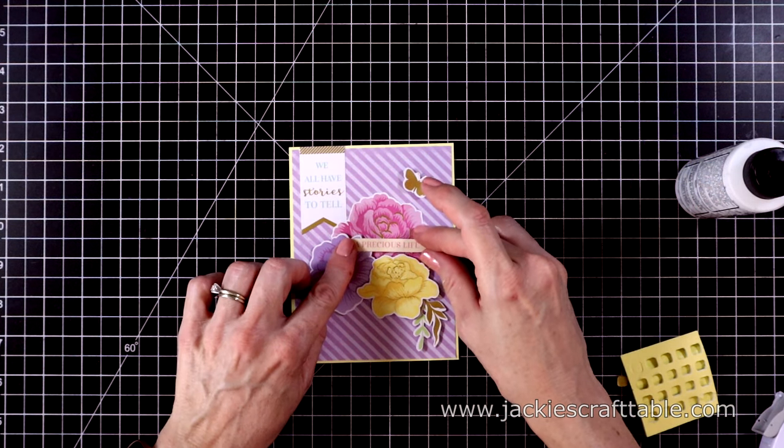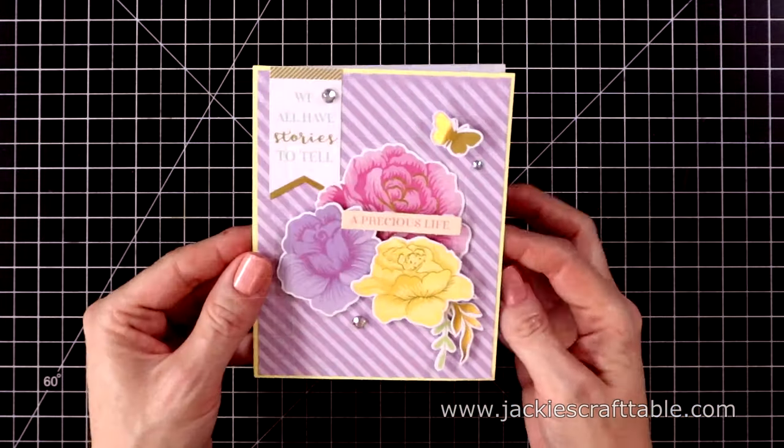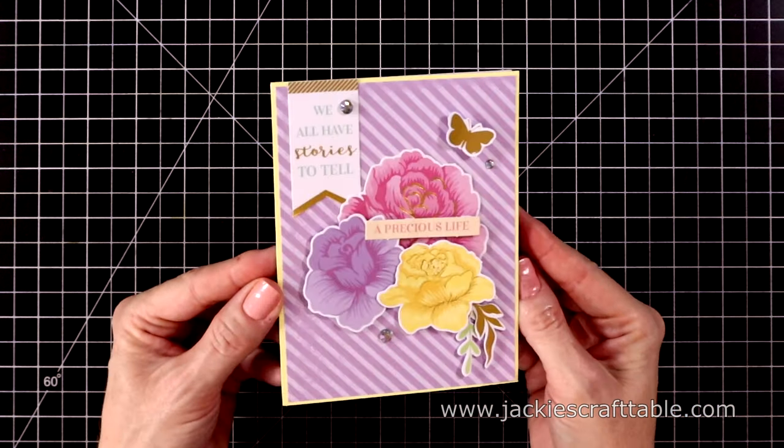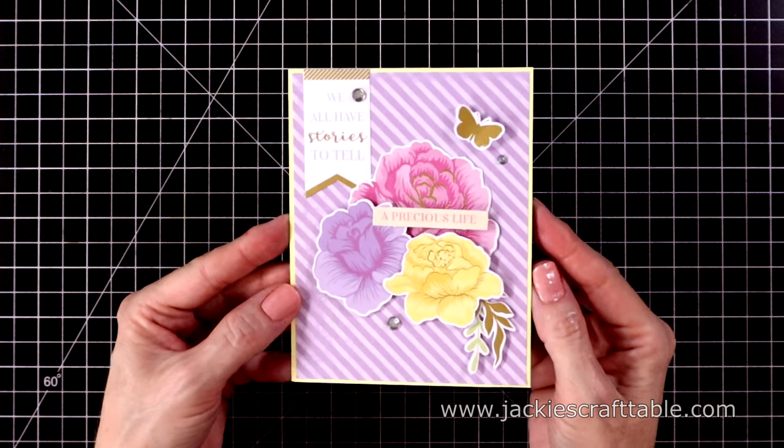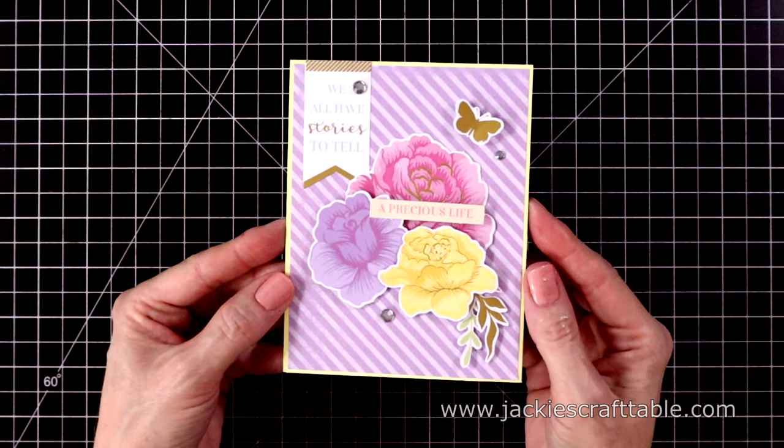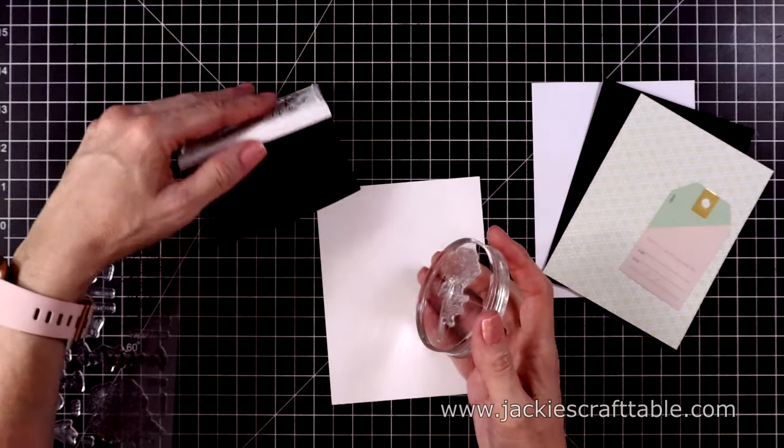The second sentiment says a precious life. I popped it up with more foam squares and a little bit of glue on the purple flower. And here's a close-up look. I also added more gems. So far, these cards are just kind of all-occasion cards. Just something fun to send out at any time.